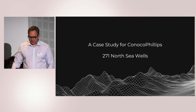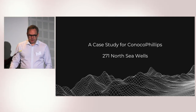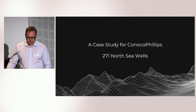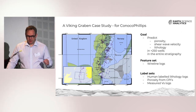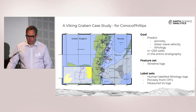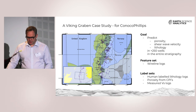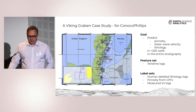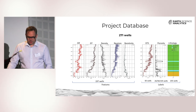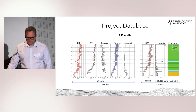The case study we did was for ConocoPhillips in the North Sea, on 271 wells. We're predicting porosity, shear velocity, and lithology. The feature set is wireline logs, and we have three different label sets: human-labeled lithology logs, porosity data from CPIs generated by petrophysicists, and measured shear velocity logs. The dataset looks typically like this for a typical well, with a rich suite of logs standard in the North Sea, and the three different target properties.